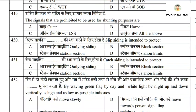Question 449: signals that are prohibited to be used for shunting purpose — this is one important question for your exam. We should not use these signals for shunting purpose: entry signals, outer signal, home signal, and LSS. These signals are prohibited for shunting purposes. So the answer is option D: all of the above.